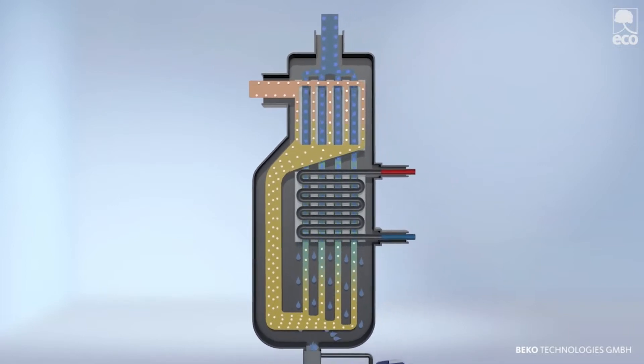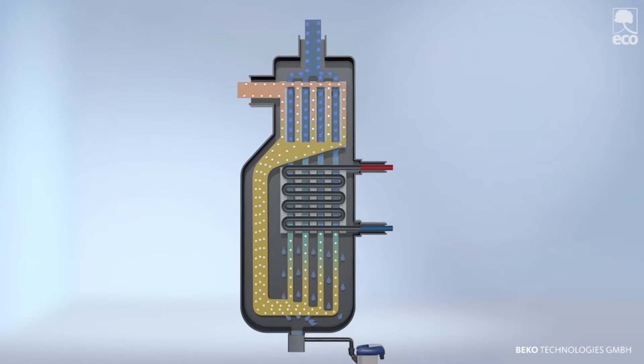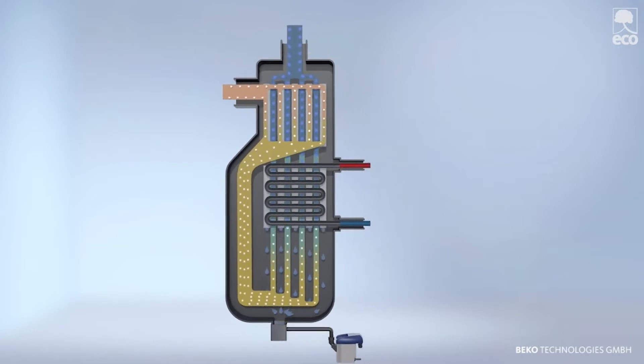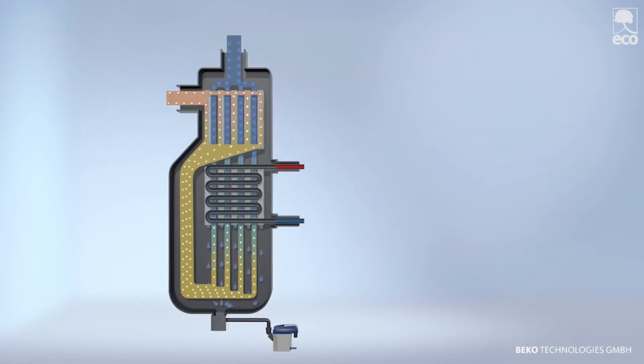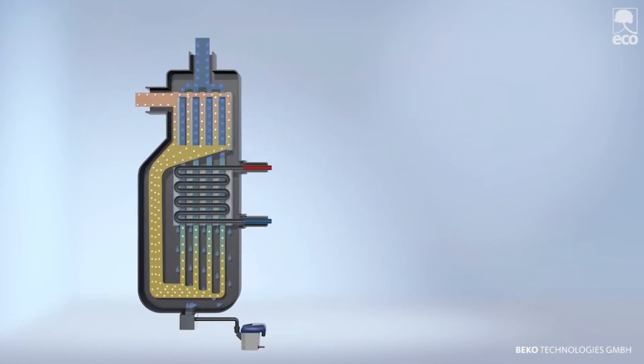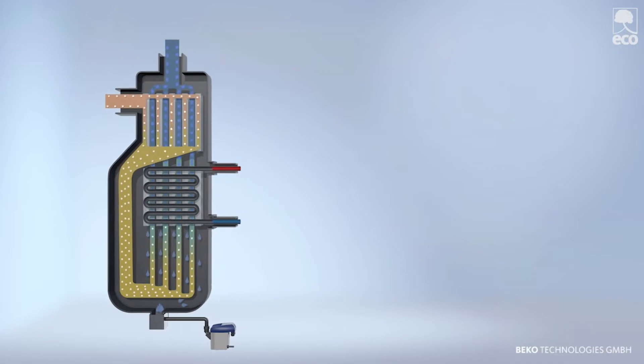Thanks to the streamlined construction, the compressed air passes almost resistance-free through the vertical heat exchanger without noticeable deflection. This minimizes pressure loss, thus lowering the system's energy consumption.